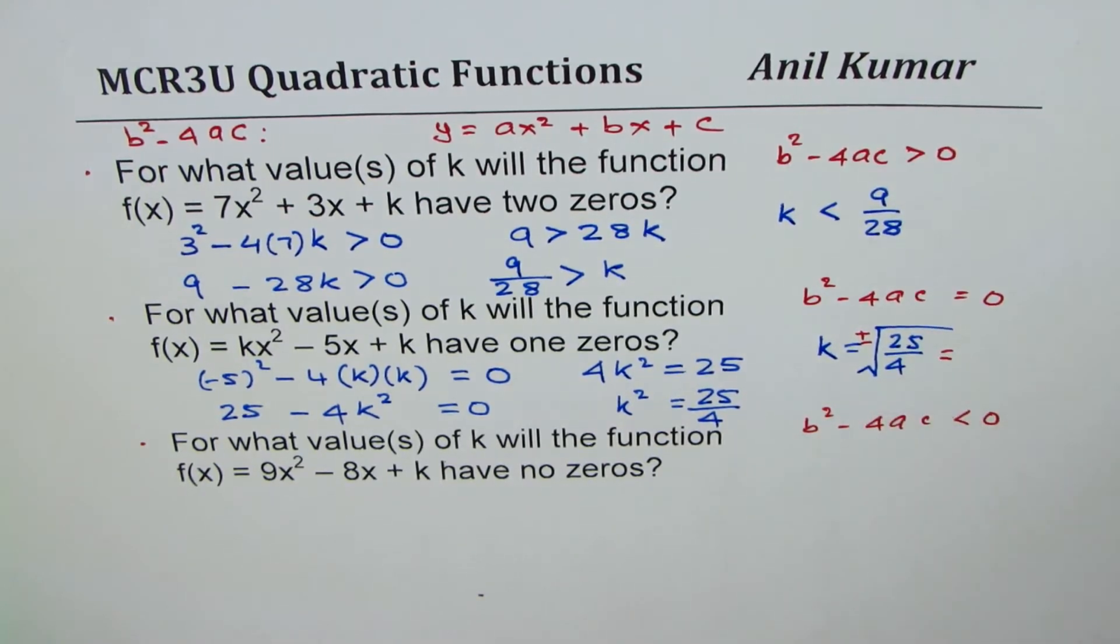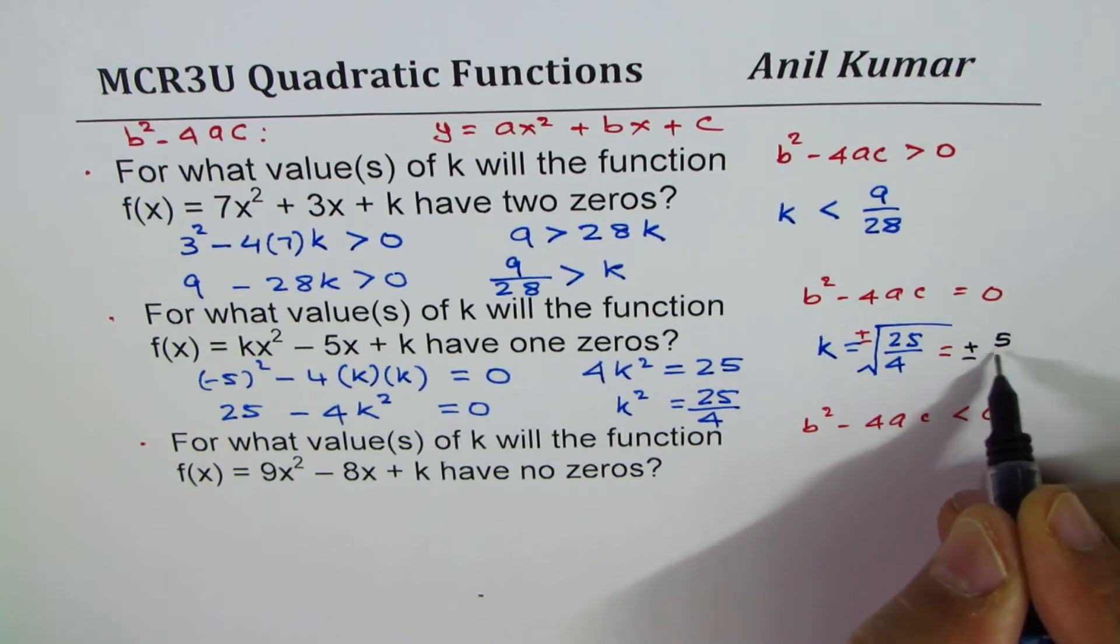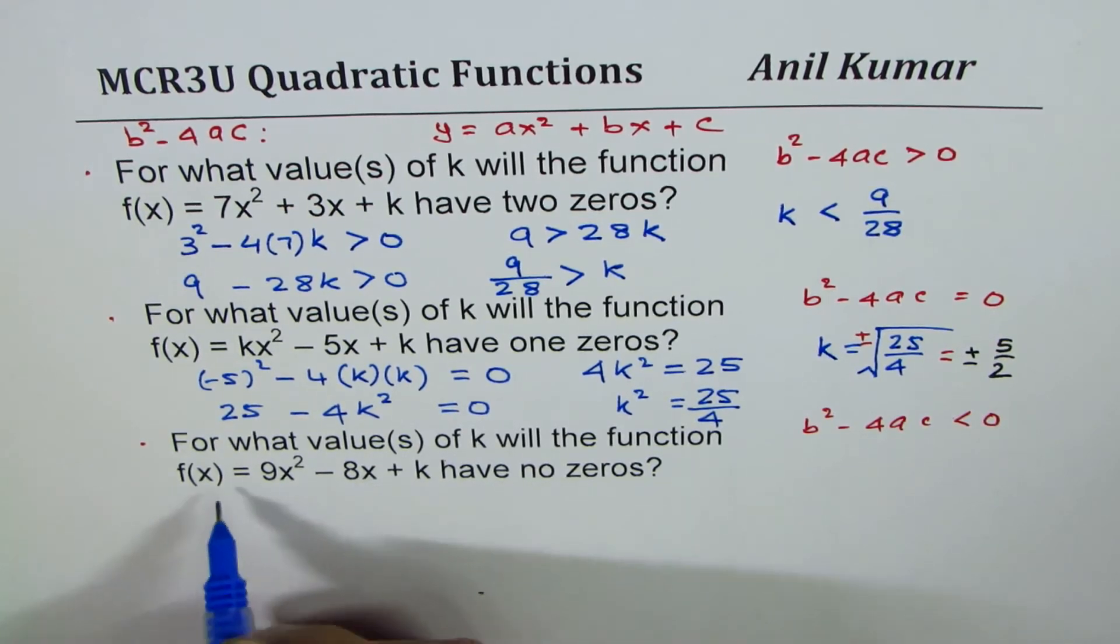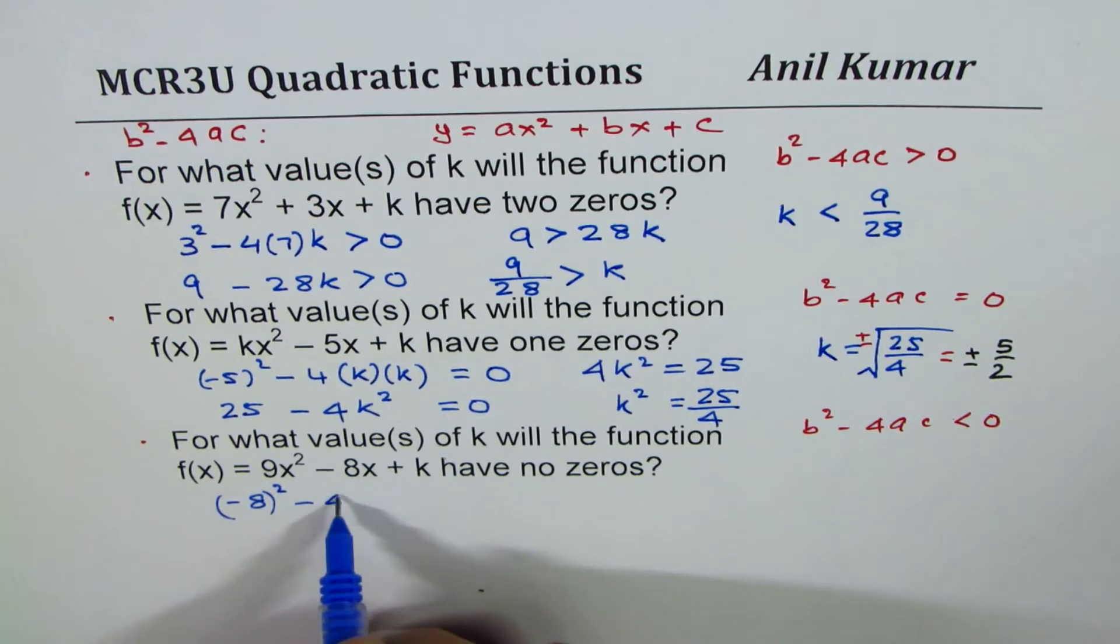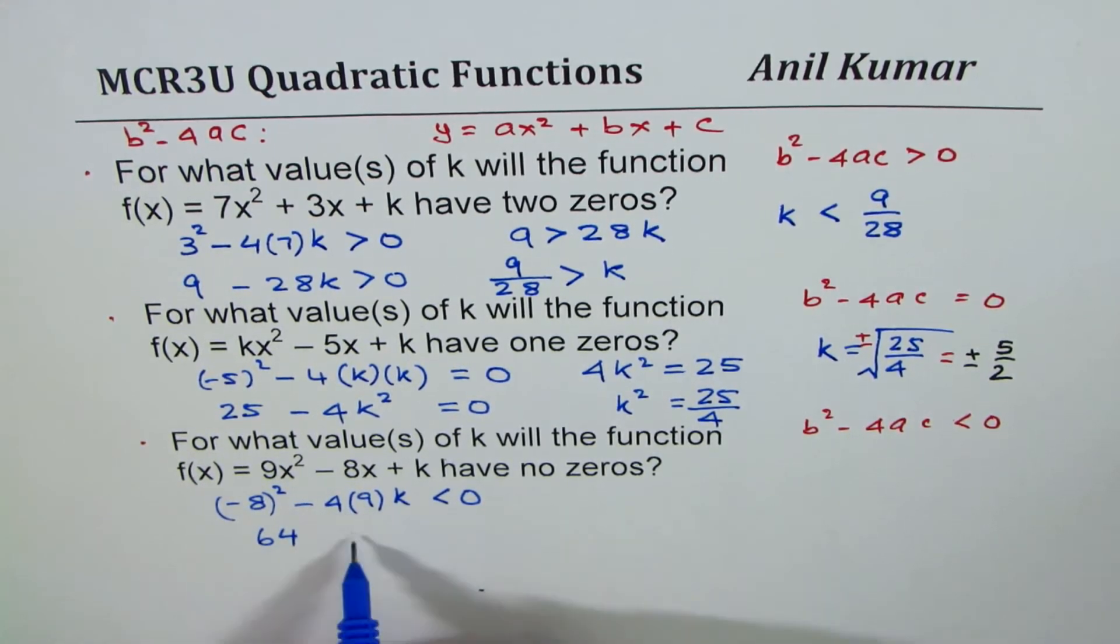For the third problem, -8 squared minus 4 times a is 9 times k should be less than 0. So that is to say 64 - 36k < 0.